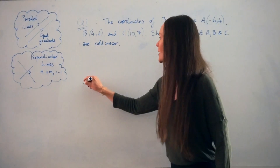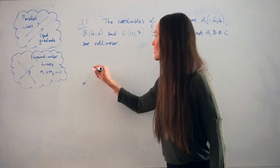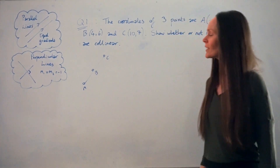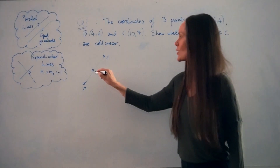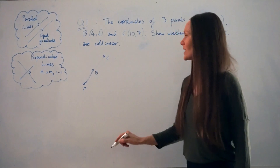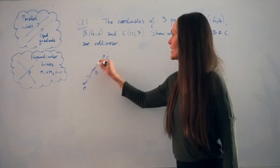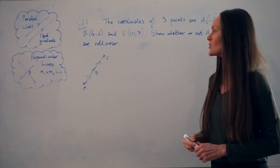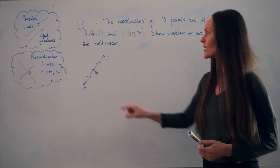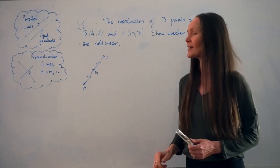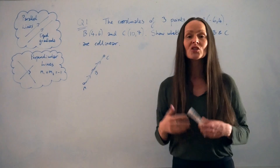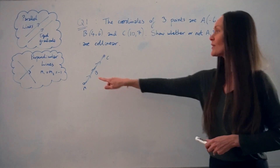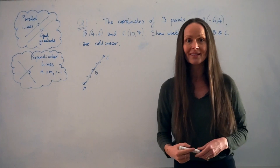If I just draw a diagram assuming they are on the same straight line — A, B, and C — it would look something like this. You should be able to see that the gradient of line AB is the same as the gradient of line BC if they lie on the same straight line. So it's a good idea to work out the gradient of these two separate lines and then compare them. If it's the same gradient, they're collinear; if they're two different gradients, they're not collinear.